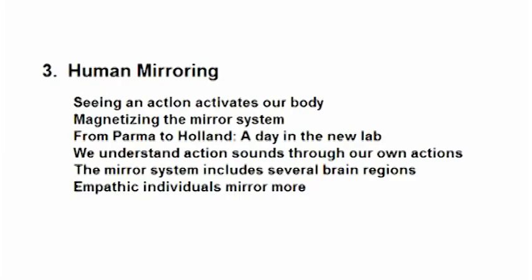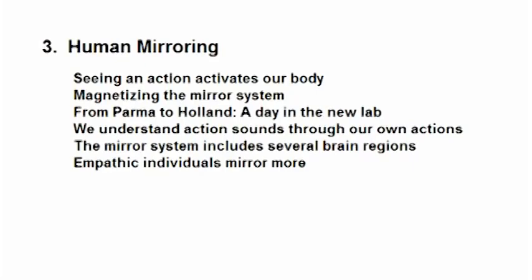I start from the monkey and mirror neurons in the monkey, and that's basically chapters one and two. Then in chapter three, I'm explaining how we can study that in humans. Because obviously in humans, we cannot put electrodes into the brain of people.